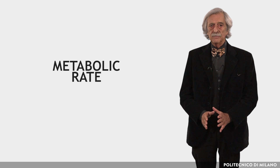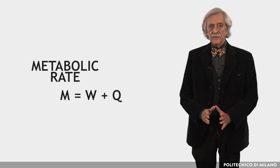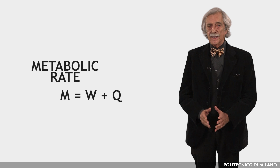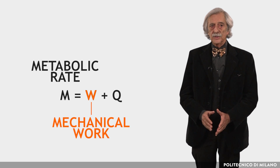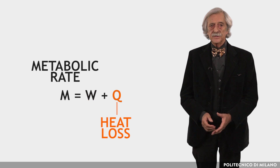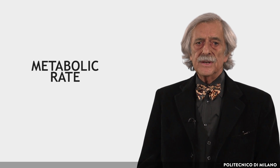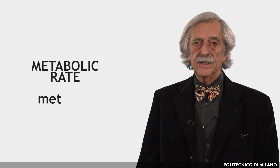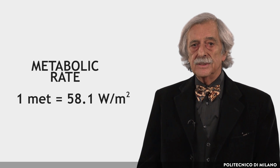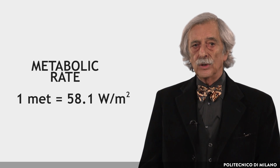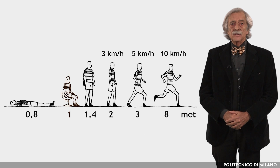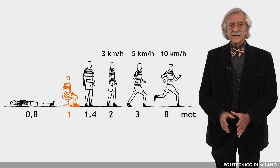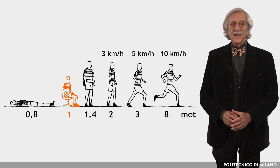The energy balance of our body can be written as M = W + Q, where M is the metabolic rate, W is the mechanical work, and Q is the heat loss. The metabolic rate is expressed in MET, or in W per square meter of body surface area. One MET is equal to 58.1 W per square meter. A seated person produces one MET.